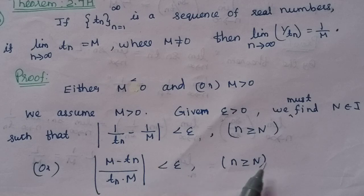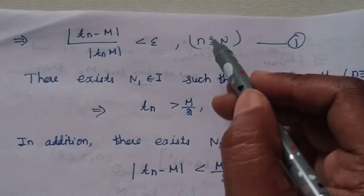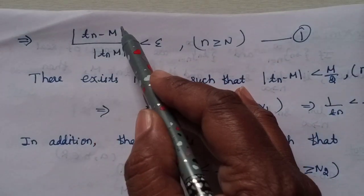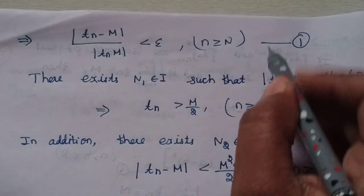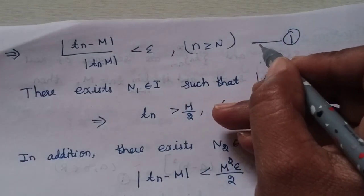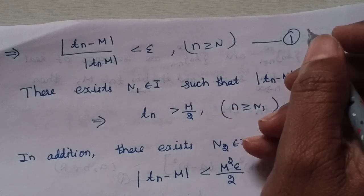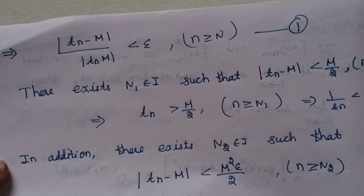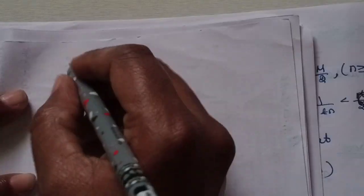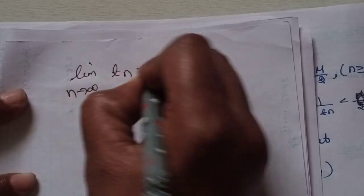This modulus of 1/tn minus 1/m equals modulus of (tn minus m) divided by modulus of tn into m. Since limit n tends to infinity of tn equals m, we can work with the expression modulus of tn minus m.